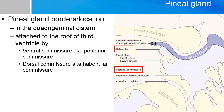The pineal gland is located in the quadrigeminal cistern, right around here. It is attached to two structures. Superiorly or dorsally, it is connected to the habenular commissure that we talked about in part one. Inferiorly or ventrally, it is connected to the posterior commissure, as denoted here.